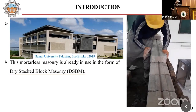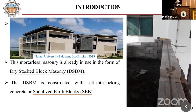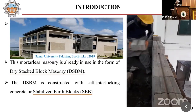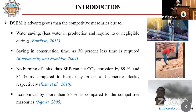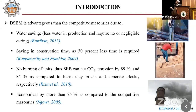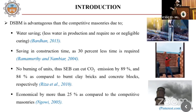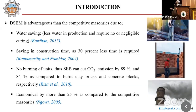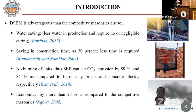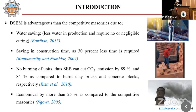This mortarless masonry is already in use in the form of Dry Stack Block Masonry (DSBM). DSBM is constructed with interlocking concrete or stabilized earth blocks. It requires less water in production, negligible curing, and 30% less construction time. No burning of units is required. Stabilized earth blocks can cut carbon dioxide emissions by 89% and 84% compared to burnt clay bricks and concrete blocks respectively, and are economical by more than 25% compared to competitive masonry.